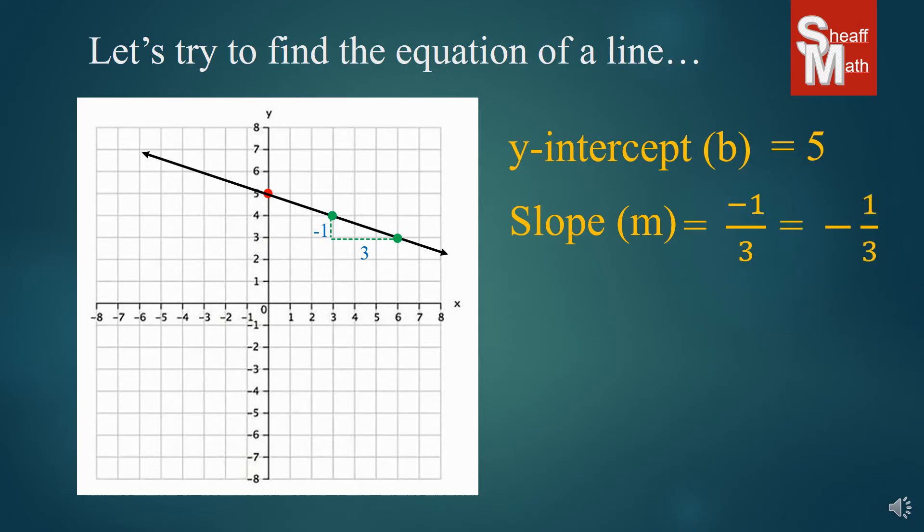I'm going to write it with the negative out front. I want you to know that these two numbers are exactly the same. It doesn't matter where the negative is. The negative could be on the top number, it could be on the bottom number only, or it can be out in front like I have it on the right. This is the way we like to write it when it's in equation form. So our m is negative 1 third and our b is 5, and so we write it in our equation.